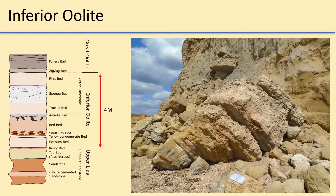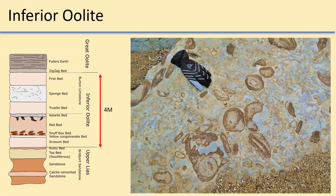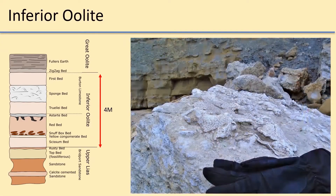At the top of the Bridport Sandstone sits four metres of the inferior oolite. This thin outcrop is known as a condensed section — for certain long periods it has been starved of sediment. In the Cotswolds this section is 100 metres thick, and on Skye in Scotland the equivalent section is almost 500 metres thick. Here at Burton Bradstock it is very fossiliferous. Two significant beds are called the snuff box and the sponge bed.